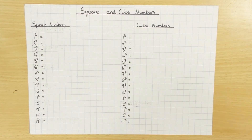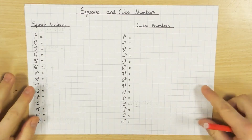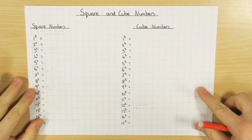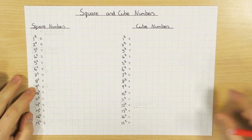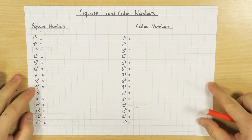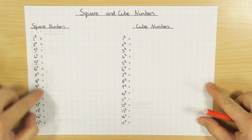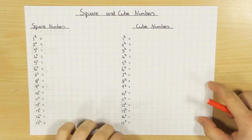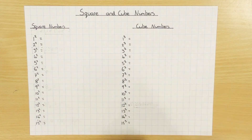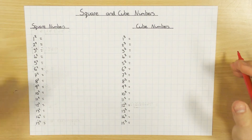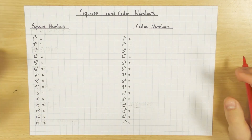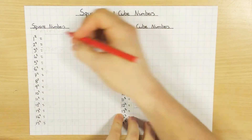Hi guys, in this video we're going to have a look at square and cube numbers. Now some of these you just need to know, and others I'm going to show you how to work out or how to use a calculator to work them out. But the square numbers here are definitely numbers that you should know and need to be aware of when solving equations or different bits and pieces like that. It comes in very, very handy. So what is a square number?